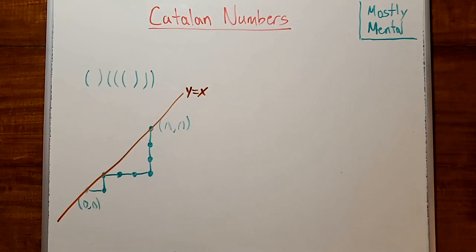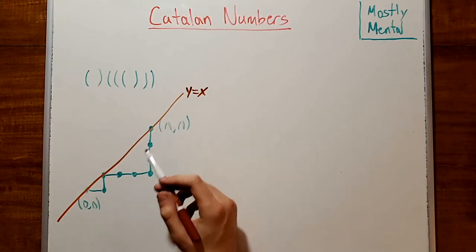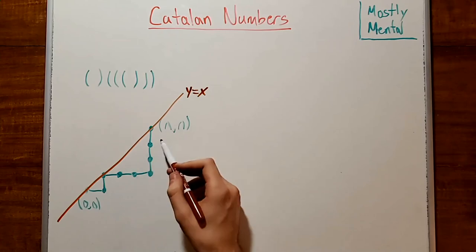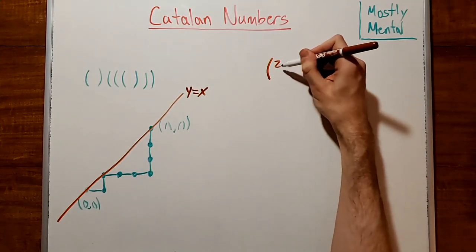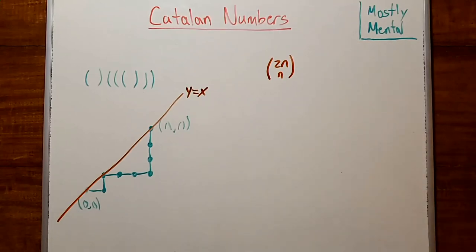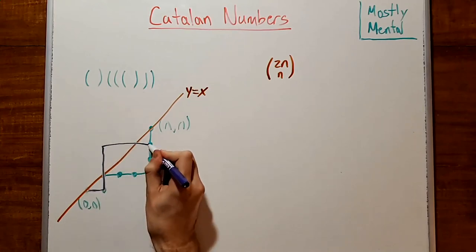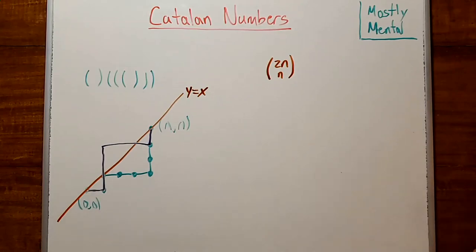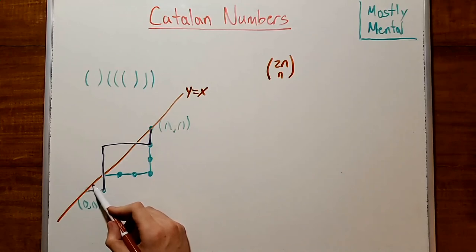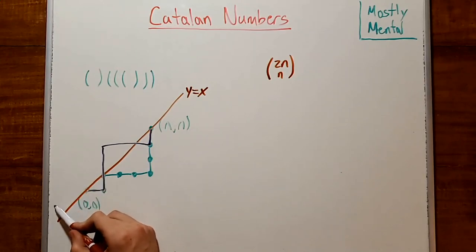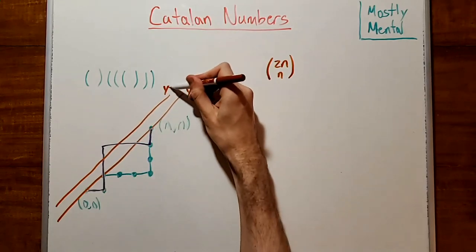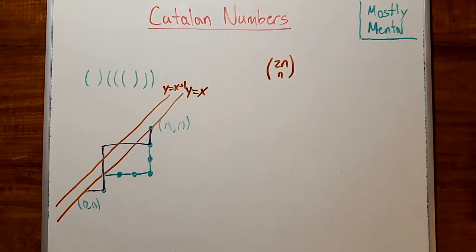So how many of these paths are there? Well as a first guess, we can count the paths ignoring that restriction. So all of the paths from 0, 0 to n, n, and as we know there are 2n choose n of those. But clearly we're over-counting here, we're including paths like this one which cross over the line. So how much are we over-counting by? Well notice that every path that passes above y equals x must somewhere intersect the line immediately above it, that is y equals x plus 1.